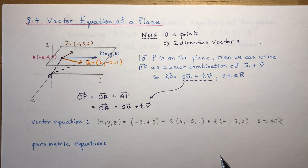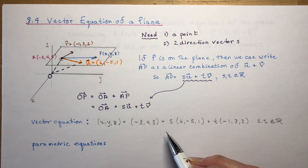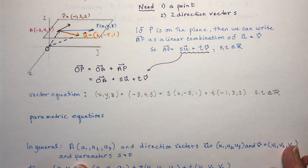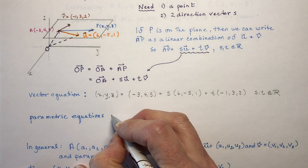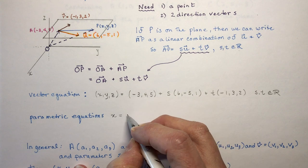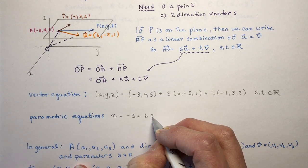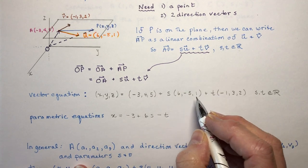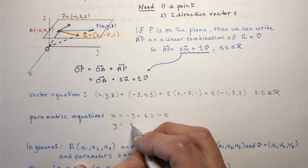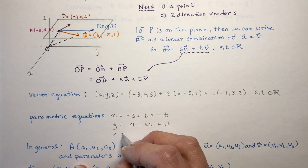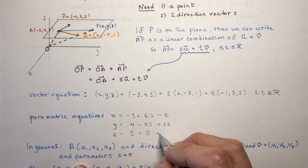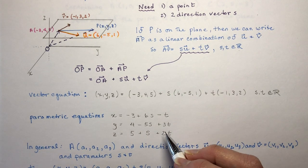In this exercise we'll be finding a second direction vector, or maybe we have three points on a plane and we want the equation. For the parametric equations, X equals minus 3 plus 6S, Y equals 4 minus 5S plus 3T, and Z equals 5 plus S plus 2T. And there you go - you've got the parametric equations.